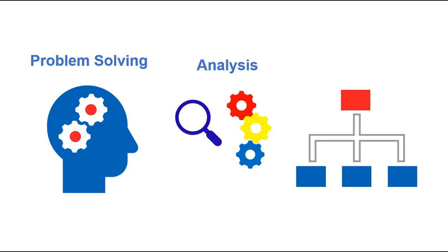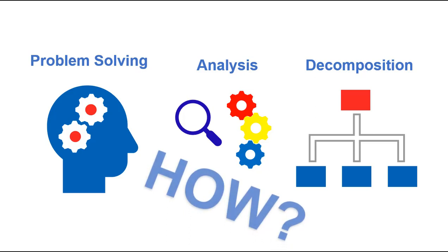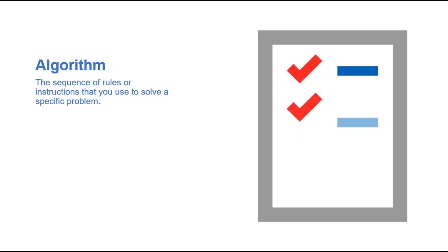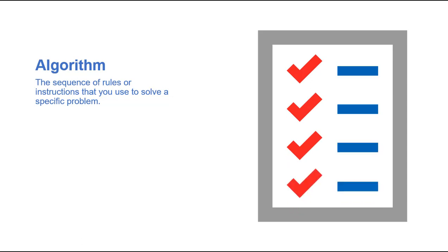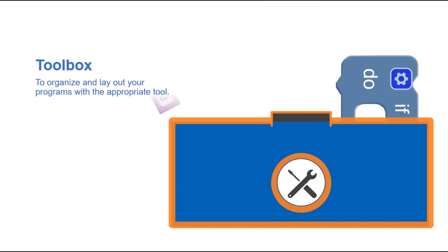Problem solving, analysis, and decomposition sort of go hand in hand when thinking about how you get to a specific result. Let's move on to algorithm, which is a sequence of rules and instructions that you use to solve a specific problem. So all these concepts within this list — they're like your computational thinking toolbox. We'll use all these elements to inform our approach to the problem.